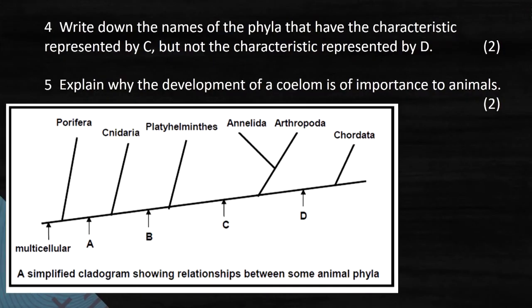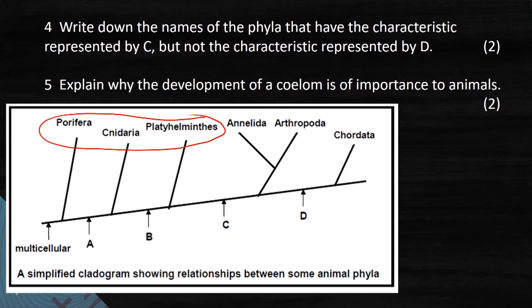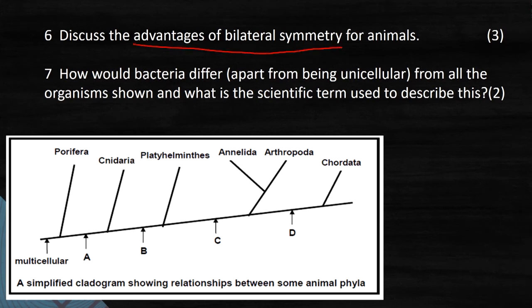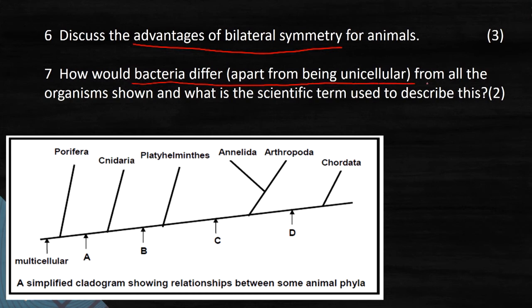For this question you really have to understand the difference between the different phyla. Then: write down the names that have the characteristic represented by C — straightforward, just those three phyla. Explain why the development of a coelom is important to animals: the gut can function independently of the body wall, and there's space for all sorts of organs to develop. Advantages of bilateral symmetry: movement, left hand, right hand. And finally, how would bacteria differ from all the organisms? The key is bacteria are prokaryotic, while all organisms in this diagram are eukaryotic — they have a proper nucleus.